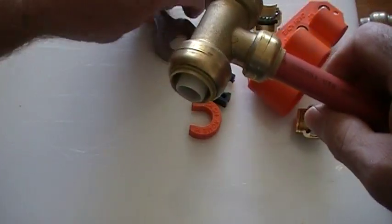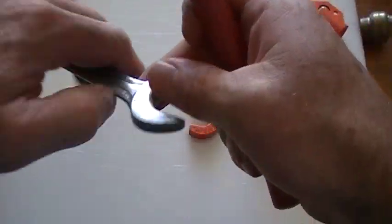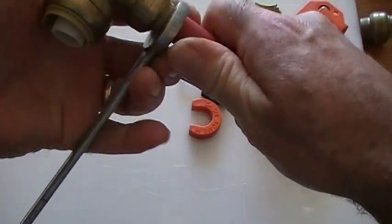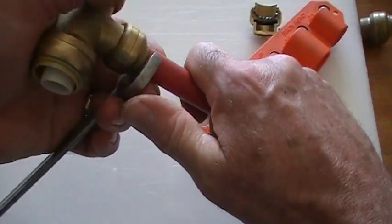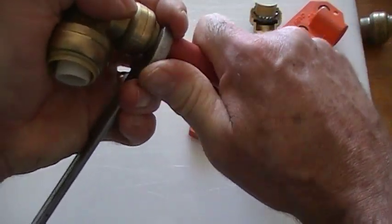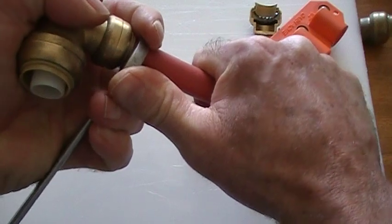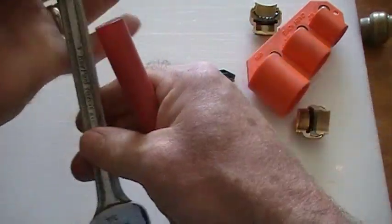And if you don't have any of the sort, you can take a five-eighths spanner or a crescent wrench, hook it on there, and remove it out of the fitting.